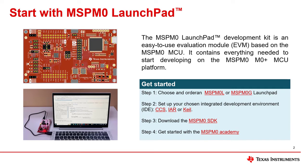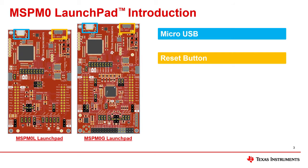Next I'll show you a more detailed view of each part of the Launchpad. First, in the upper left corner of the Launchpad is the micro USB interface. In the top right corner there is a reset button.